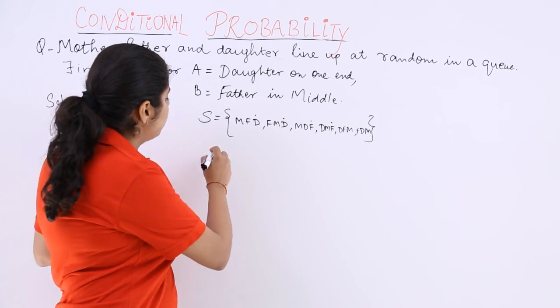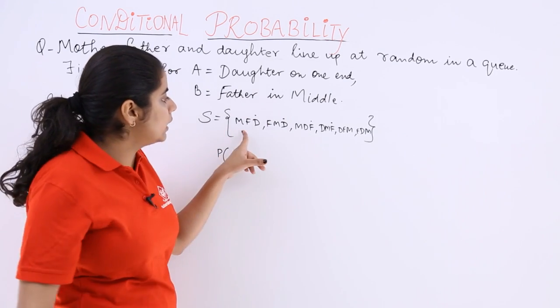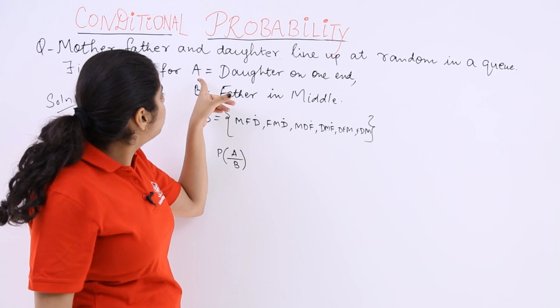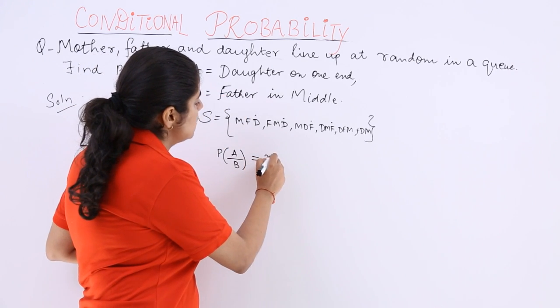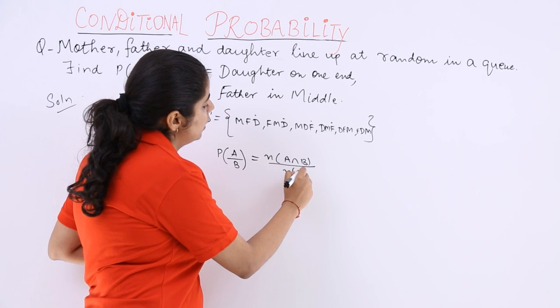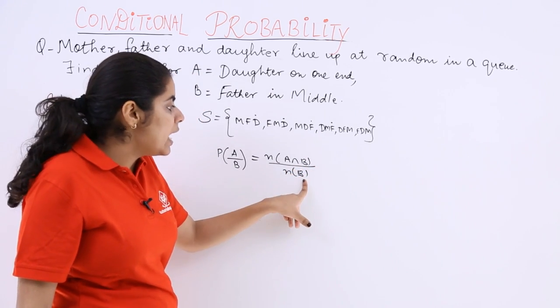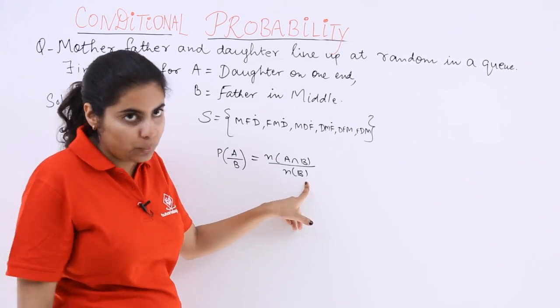Now P(A|B) we want to compute. So the total number is 6 and probability of A upon B is actually given by this formula. This you already know. So we are going to see for the intersection in the numerator and for B event in the denominator.